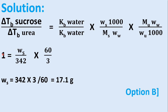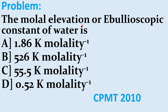Since the elevation in boiling point of sucrose equals that of urea and the solvent is the same, the ratio equals 1. So: 1 = Ws × 60 / (342 × 3). Solving for Ws: Ws = (342 × 3) / 60 = 17.1 gram. Therefore option B is correct.